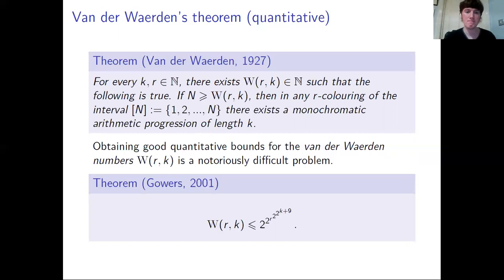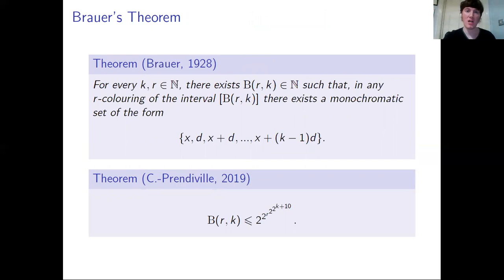It is a very famous open problem in this area to try to improve this result and get a smaller number for this conclusion. The main result of today's talk is the following generalisation of both Schur's theorem and van der Waerden's theorem due to Brouwer. Brouwer proved that given positive integers k and r, there exists a number B(r,k) such that if you colour 1 up to B(r,k) with r different colours, then not only do you obtain a monochromatic k-term progression, but you can also get such a progression where the common difference has the same colour. Our main result is that one can obtain a Gowers-type bound for the Brouwer number B(r,k).